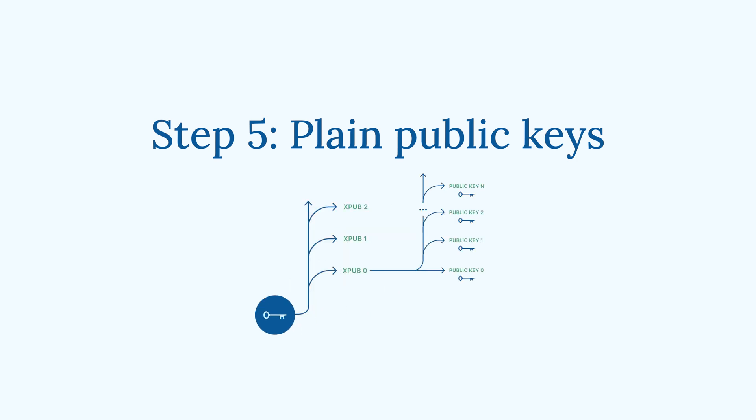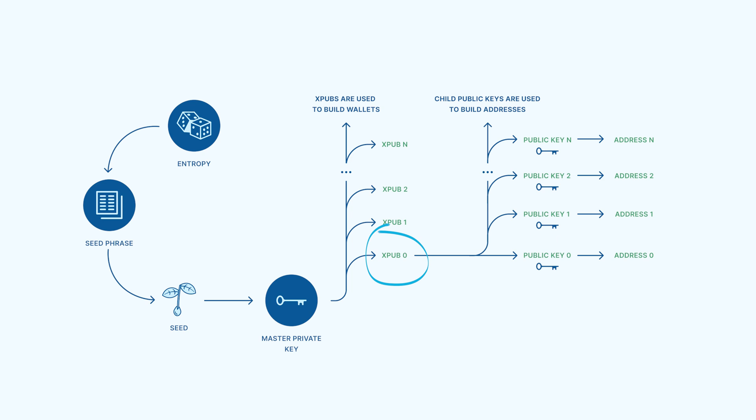Step 5: Plain Public Keys. Once we have an XPub, we've essentially succeeded in creating a Bitcoin wallet. But what even is a wallet anyway? A wallet can be thought of as a collection of addresses, each of which can receive Bitcoin and become added to the records of the Bitcoin blockchain. An XPub can produce practically unlimited plain public keys, which can each serve as a main ingredient for building an address. Plain public keys are typically hidden from the view of end users, because they only serve as a stepping stone to reach the addresses that the user will actually be interacting with.